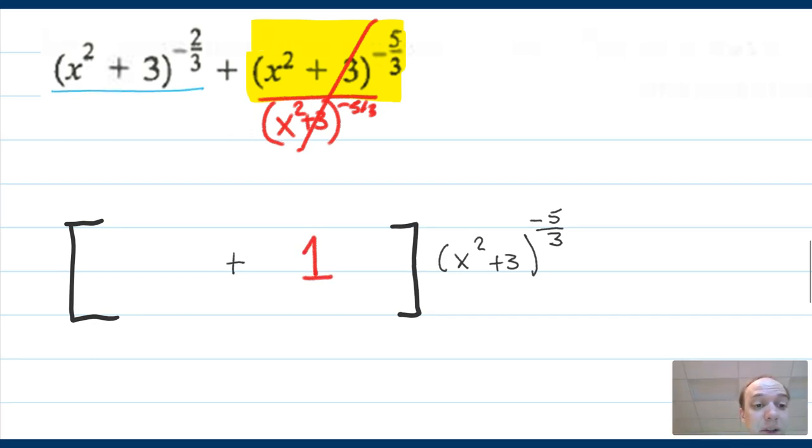On the other side, I'm going to be doing x squared plus three to the negative two thirds divided by x squared plus three to the negative five thirds to figure out what goes in here. I'm going to think about a to the negative two thirds over a to the negative five thirds. That would be a to the negative two thirds minus minus five thirds. That's the same as a to the negative two thirds plus five thirds. Five minus two, that's three. So this is a to the positive three thirds or just one.